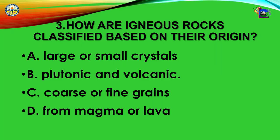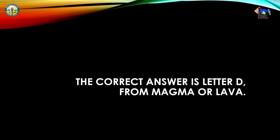Question number 3: How are igneous rocks classified based on their origin? A. Large or small crystals, B. Plutonic and volcanic, C. Coarse or fine grains, D. From magma or lava. The correct answer is letter D — from magma or lava.